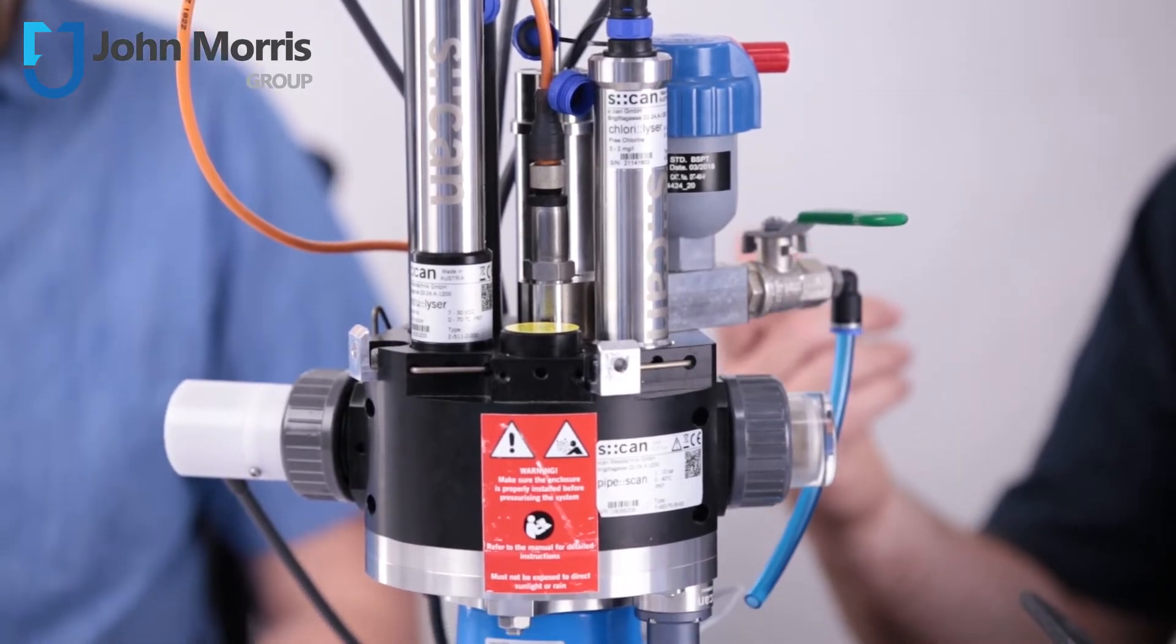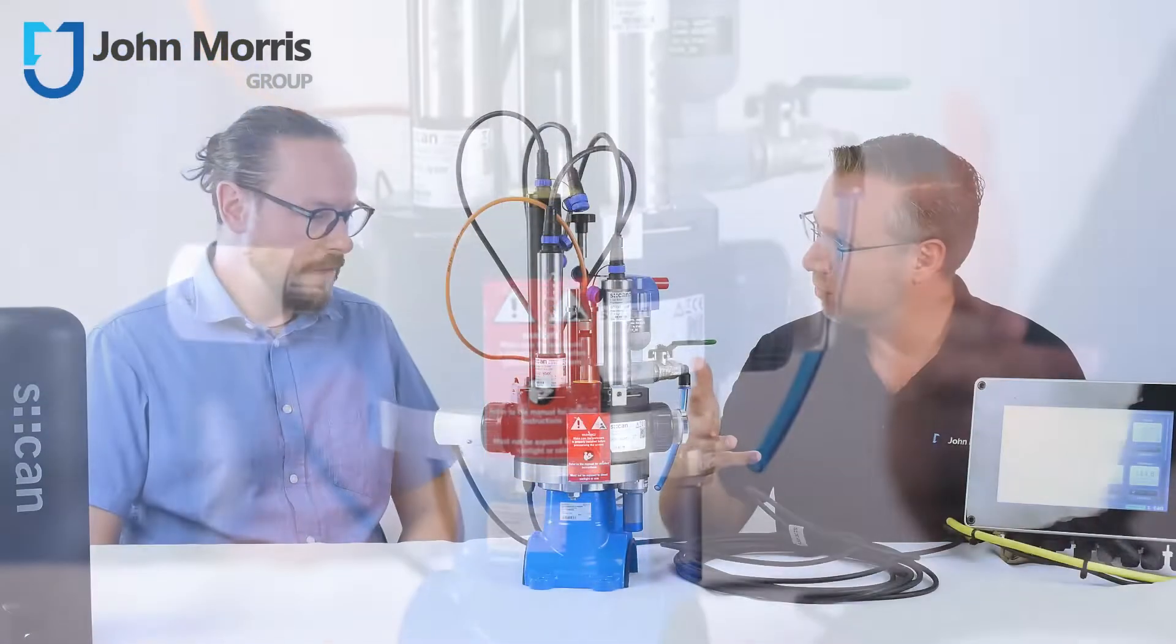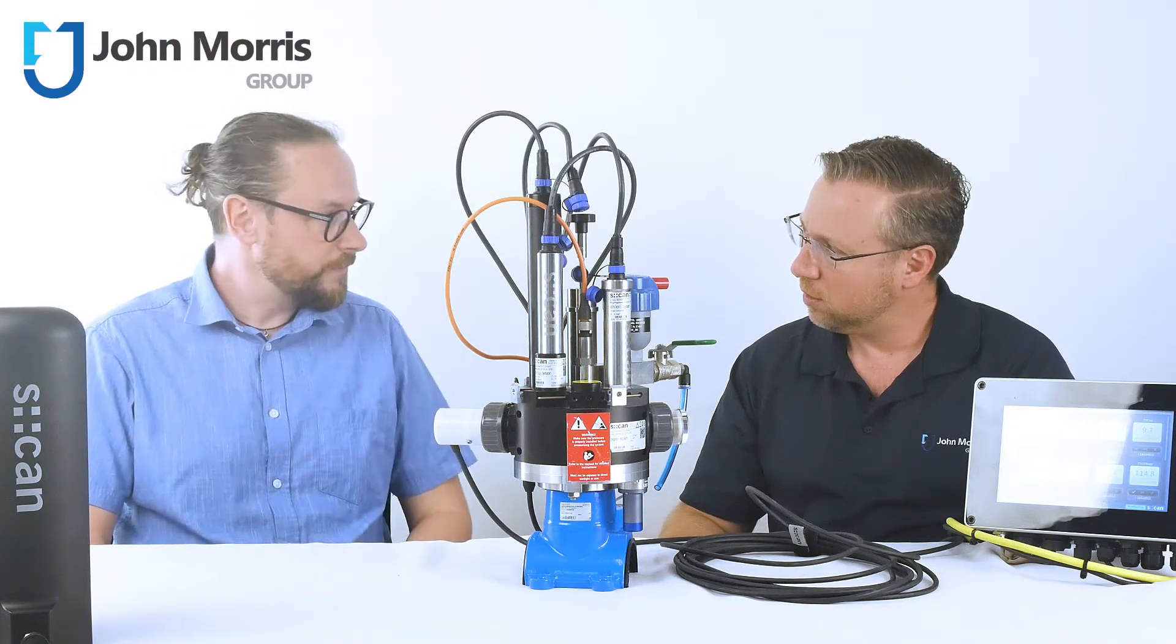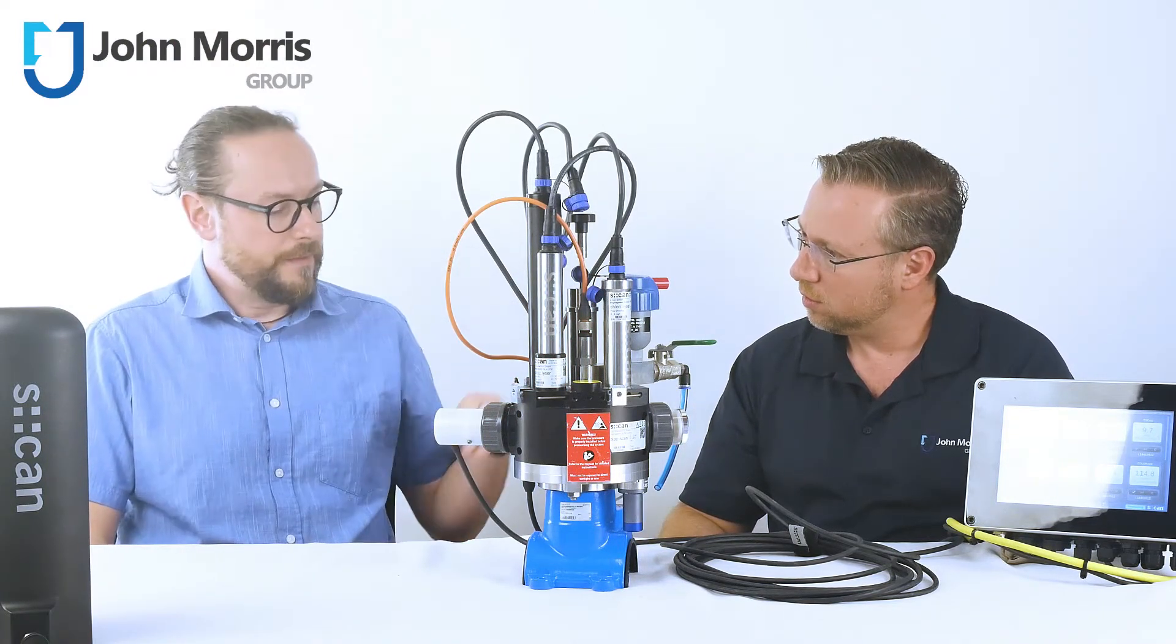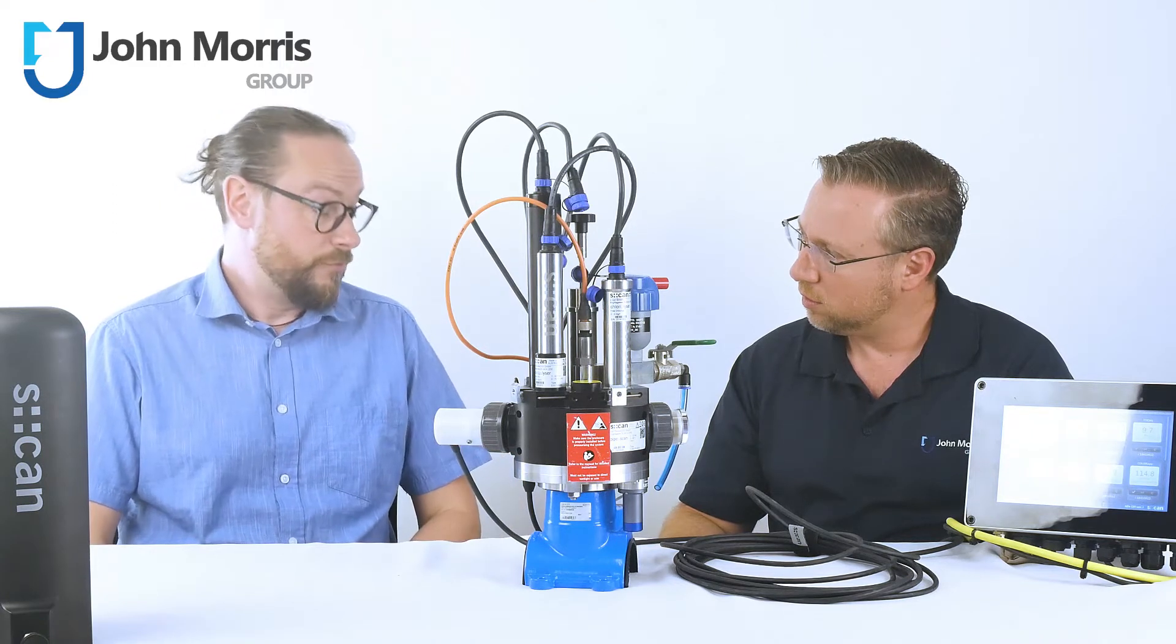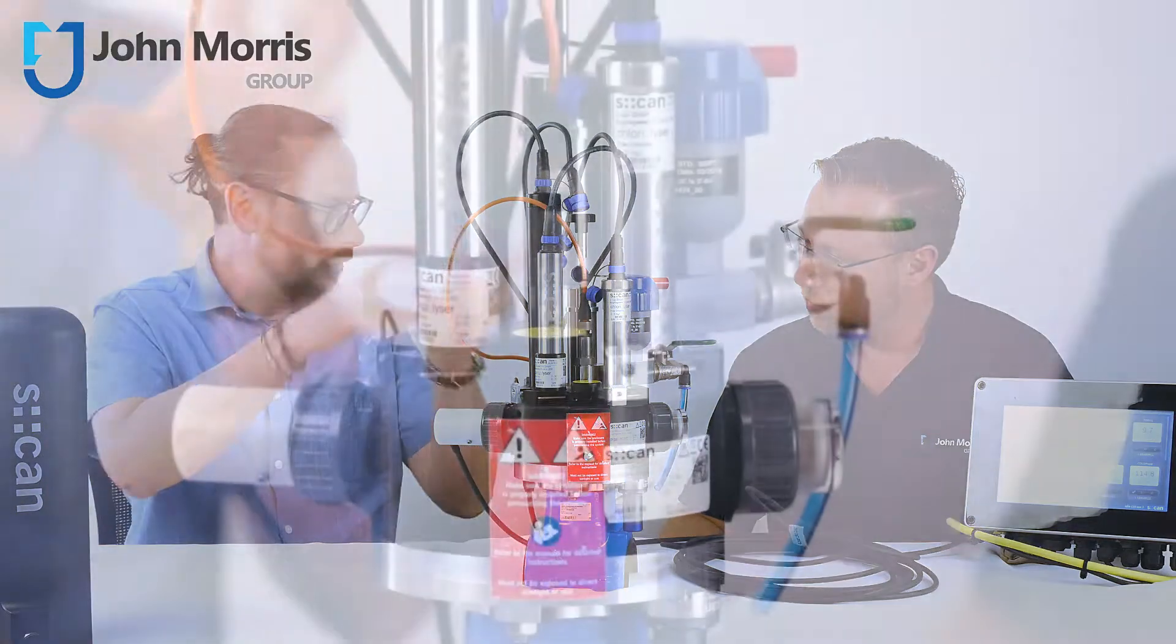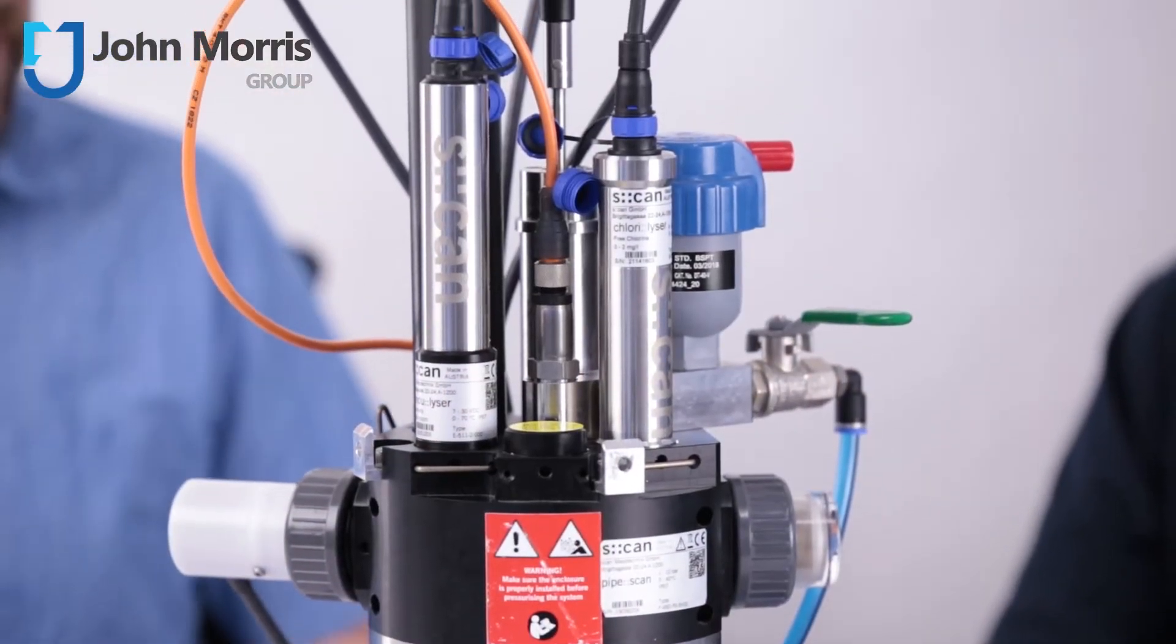Right, and do you have to turn the water network off while you install it? No, actually you can install it in operation. So you put the clamp saddle, then you can drill a hole in the pipe, and then you separate the unit from the pipe, you can do all the installations, and then you're running in a hot tap.